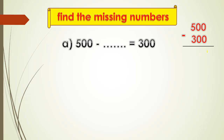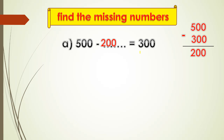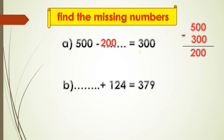Zero minus zero equals zero, zero minus zero equals zero, five minus three equals two. So the answer will be two hundred. Another exercise: missing number — any missing number I will make minus.